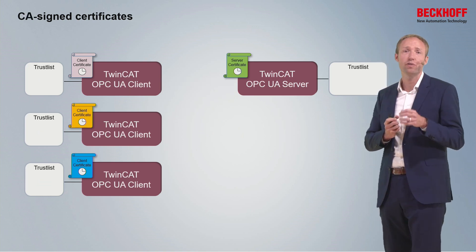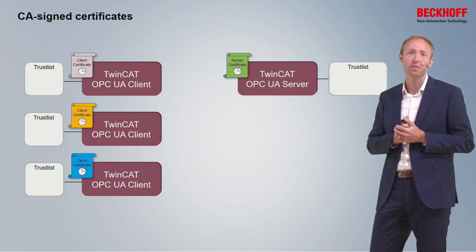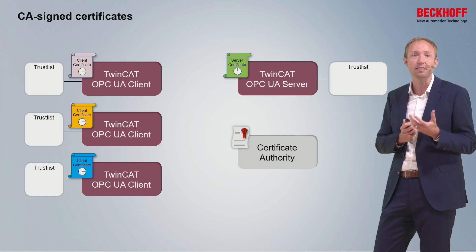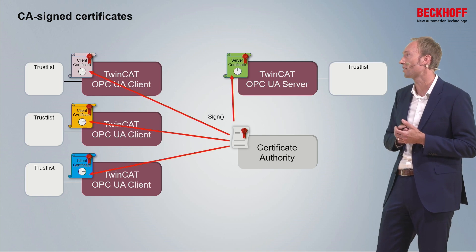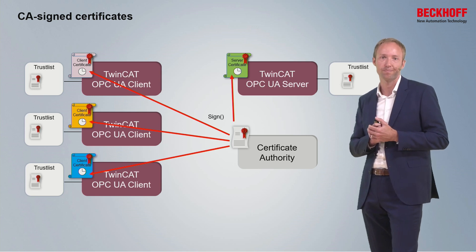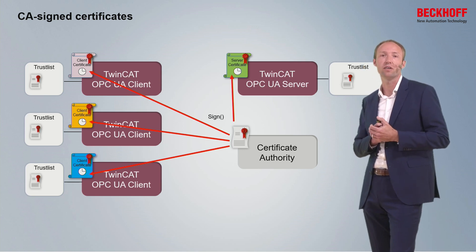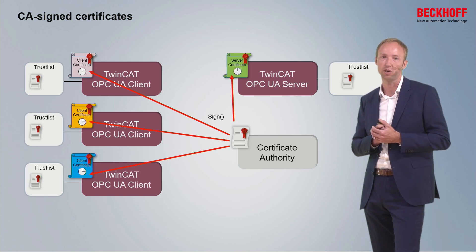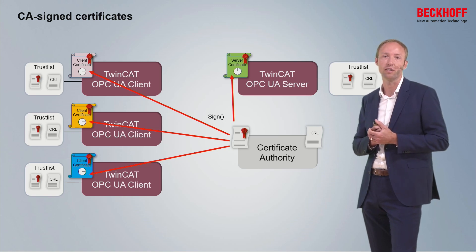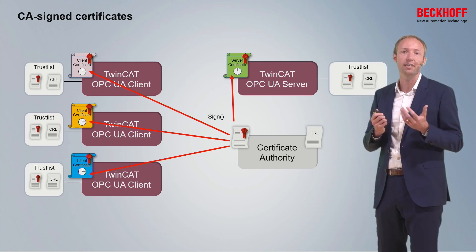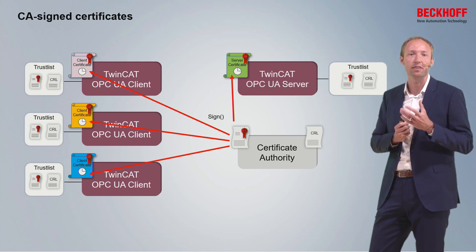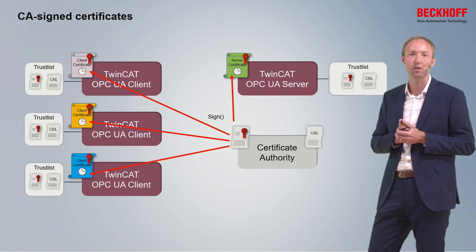The solution is to use a certificate authority. The certificate authority signs every OPC UA application certificate, so a client or server only has to trust the certificate authority instead of every application certificate individually. In addition, the certificate authority maintains a certificate revocation list (CRL), which is available to all applications and includes revoked certificates. An administrator can use the CRL to revoke a certificate — for example, if a device has been compromised and its OPC UA client should no longer connect to the server.